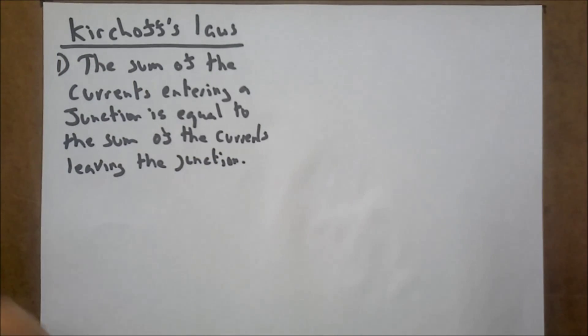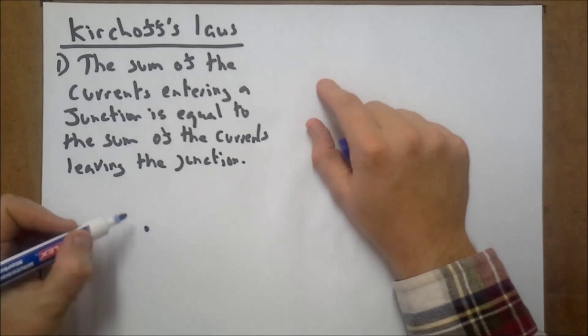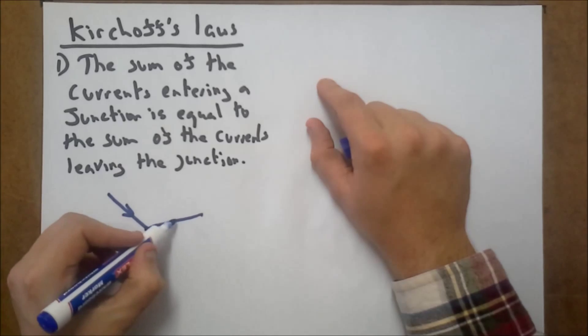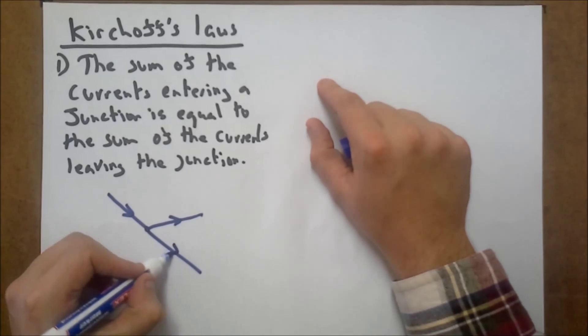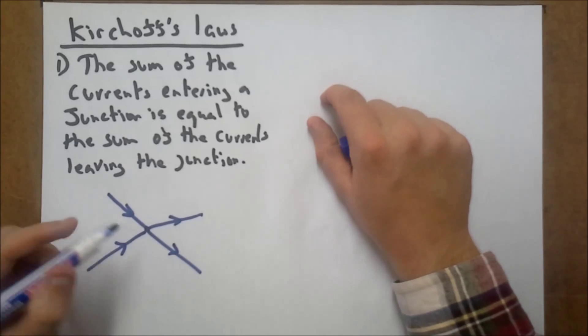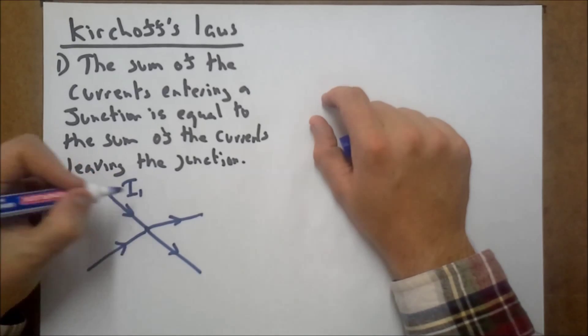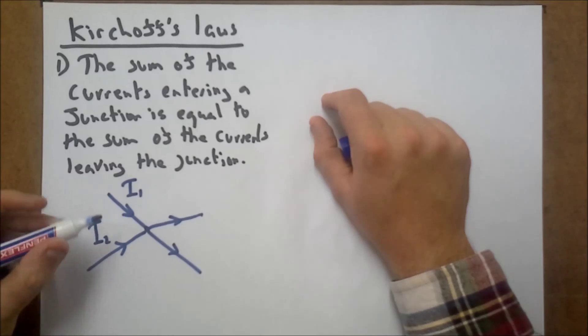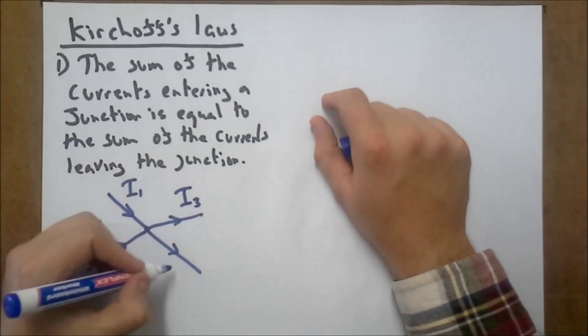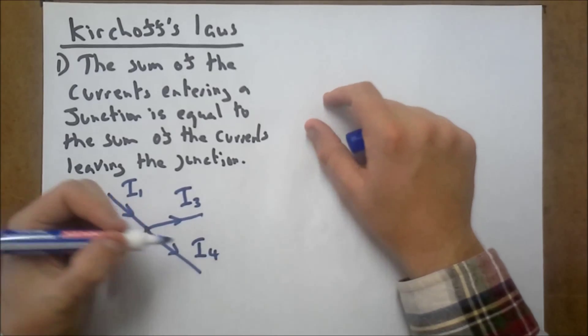So let's have an example. We could have a junction here, two currents going in - let's call this I1 and I2 - and maybe two currents going out, I3 and I4.